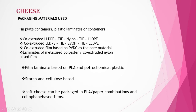The next fermented milk product is cheese. Packaging materials used for cheese include tin plate containers, plastic laminates or containers made from co-extruded LLDPE/nylon/LLDPE combinations, co-extruded LLDPE/ethylene vinyl alcohol/LLDPE combinations, or co-extruded films based on PVDC (polyvinylidene chloride) as the core material. Laminates of metalized polyester and co-extruded nylon-based films are also used. Film laminates based on polylactic acid and petrochemical plastics, as well as starch and cellulose-based materials, are also used in packaging of cheese.